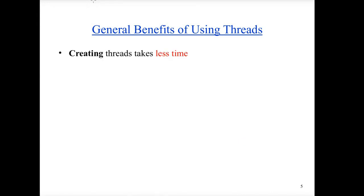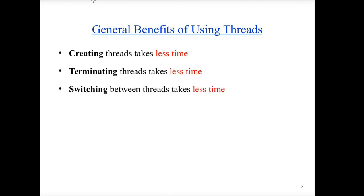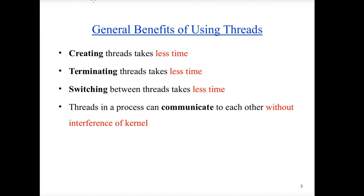What are the benefits of threads? Creating threads takes less time than creating new processes, and terminating threads takes less time than terminating processes. Therefore it is always better to use multi-threaded programs rather than multiple processes. Switching between threads also takes less time because it has less overhead on the operating system context switching among processes. And threads in a process can communicate with each other without interference of the kernel, which can reduce overhead and processing time.